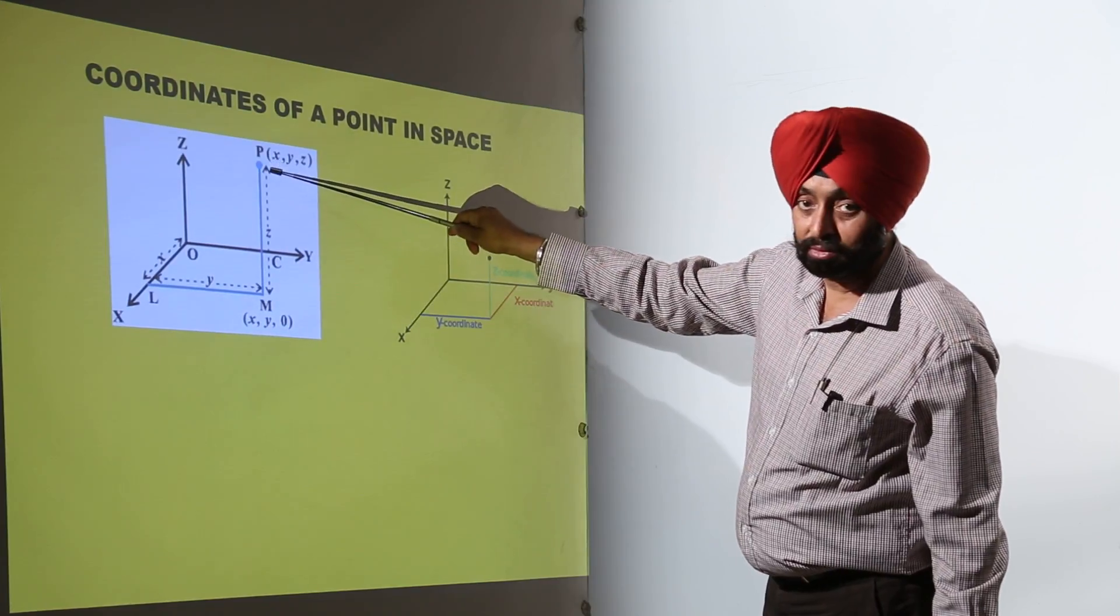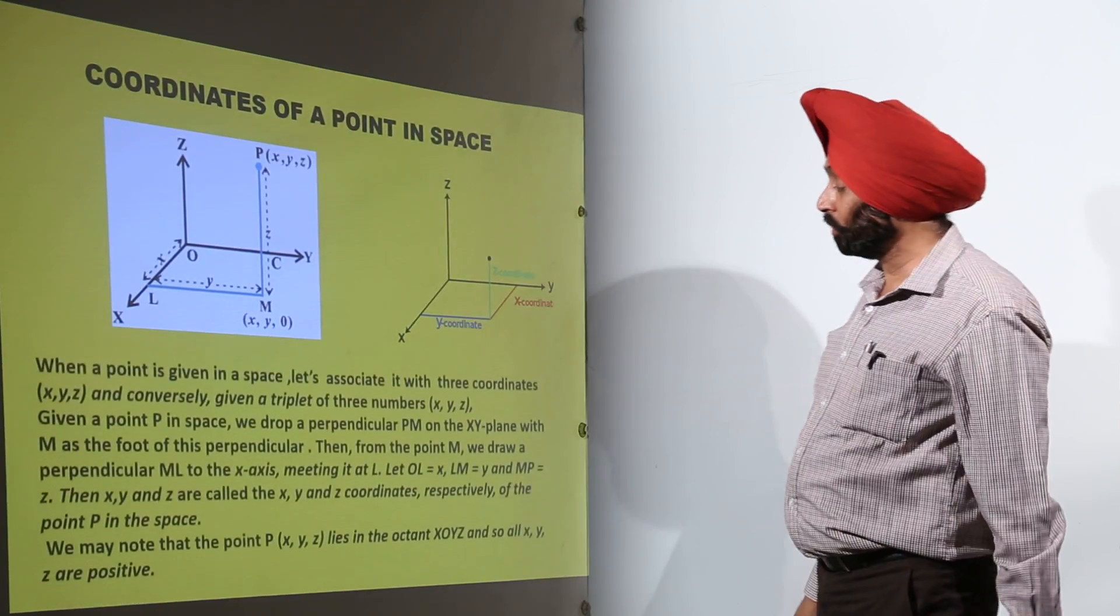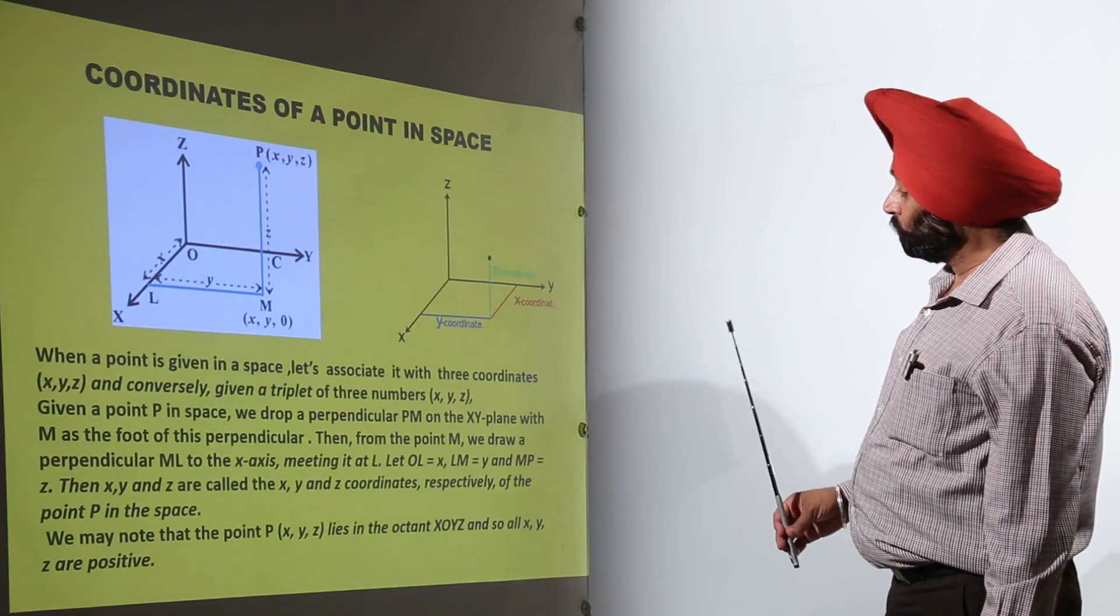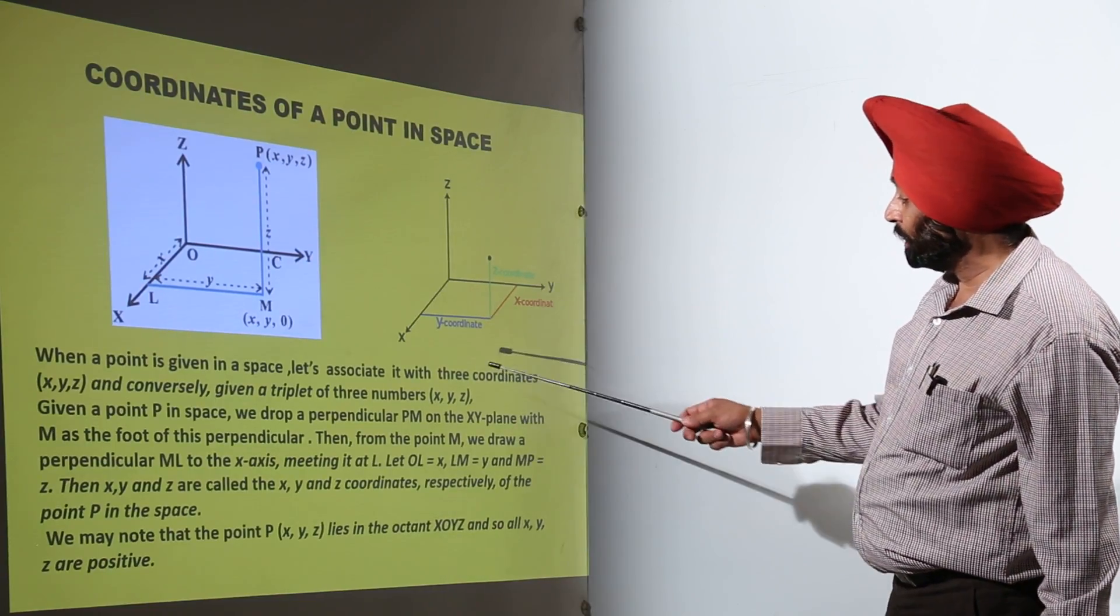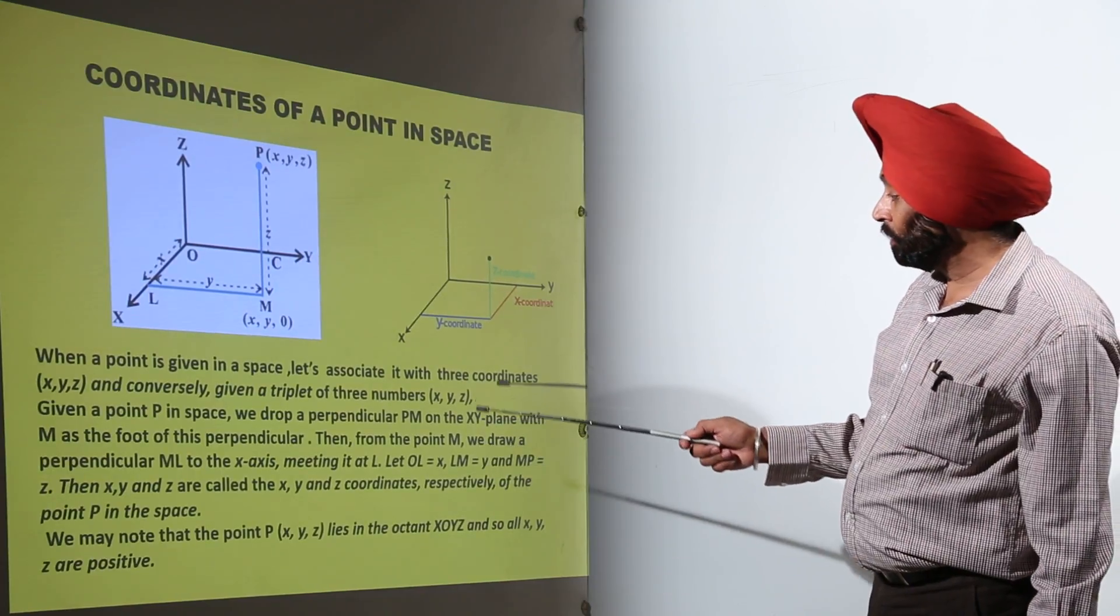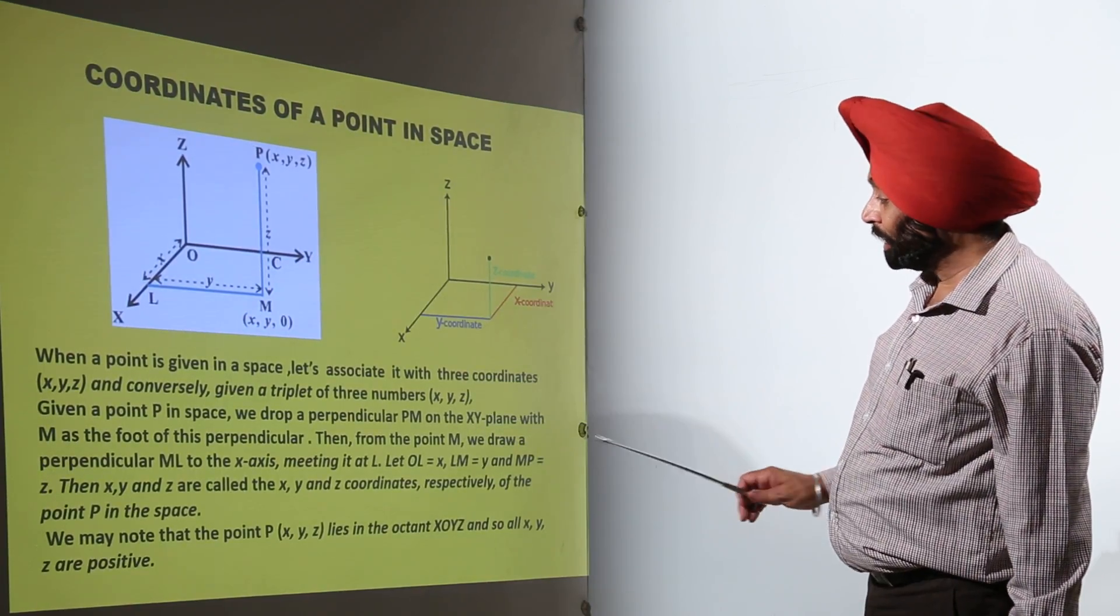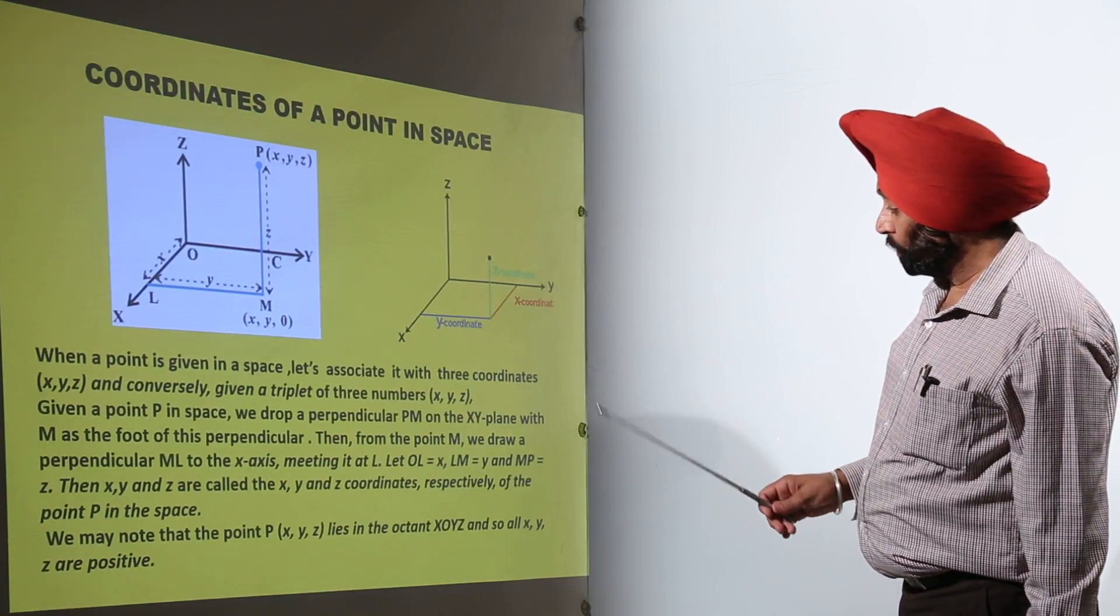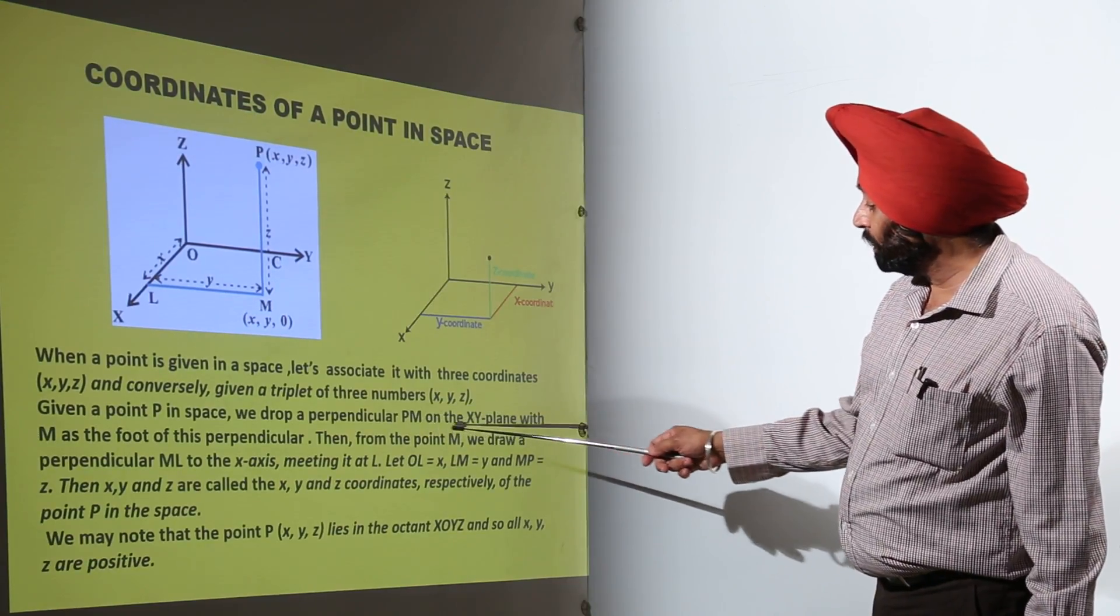Is it clear? Now just a theoretical part. Now what we are having: when a point is given in space, let's associate it with three coordinates X, Y, and Z. And conversely, given a triplet of three numbers X, Y, and Z. Given a point P in space, we drop a perpendicular PM on the XY plane.